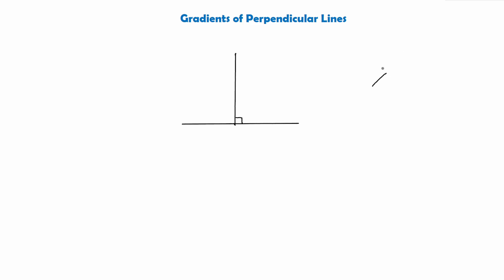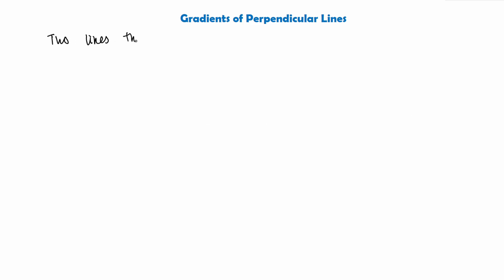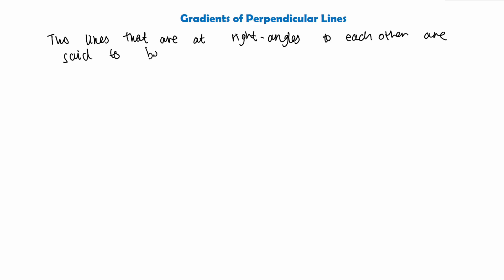Similarly we could say that this line here is perpendicular to this line here because they meet at right angles up here. You can say the same for here — they meet at a right angle so these two lines are perpendicular. To summarise, two lines that are at right angles are said to be perpendicular.